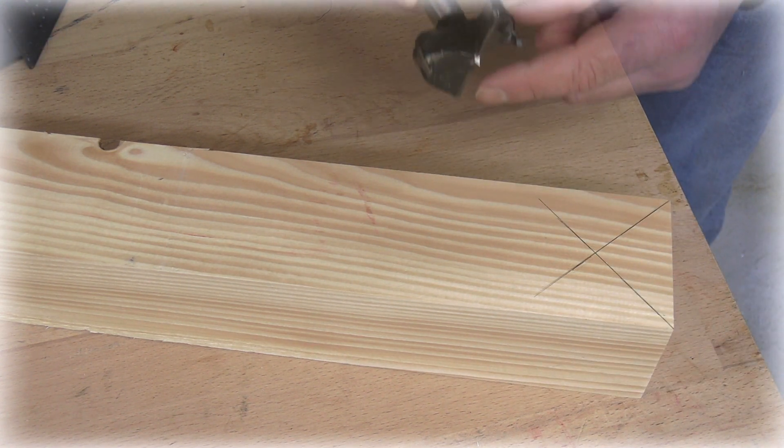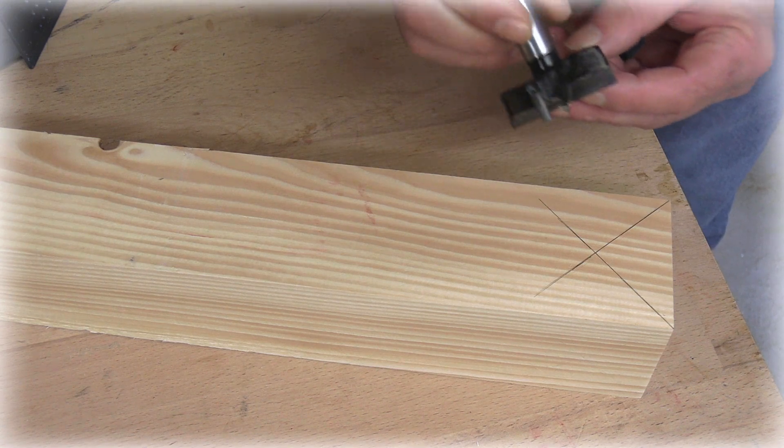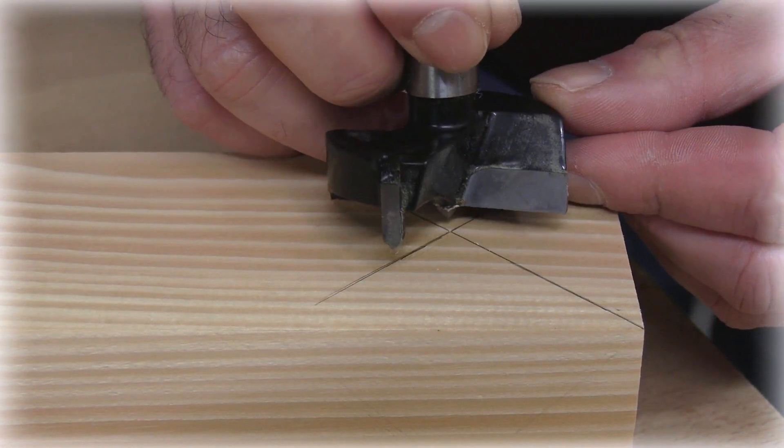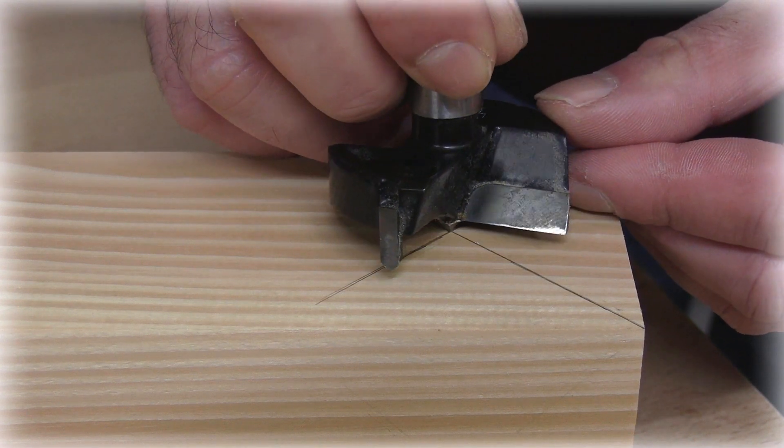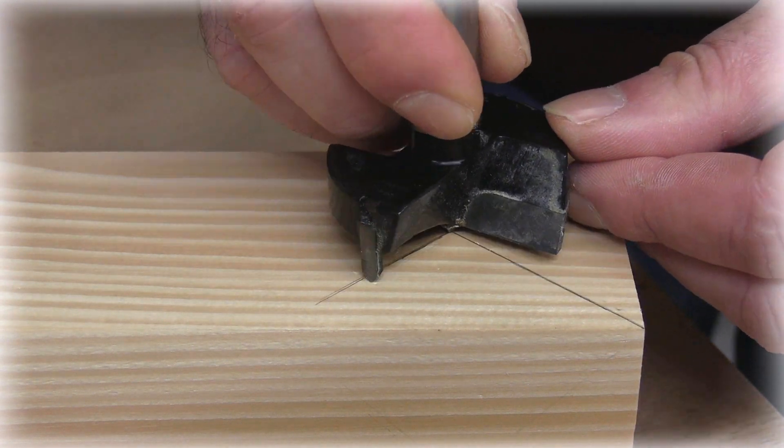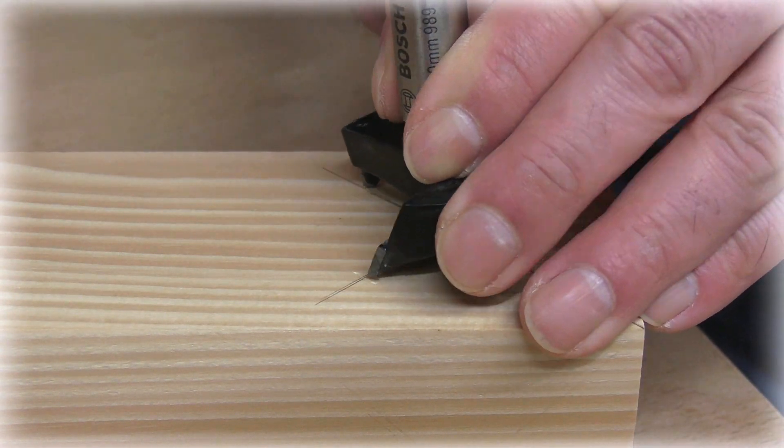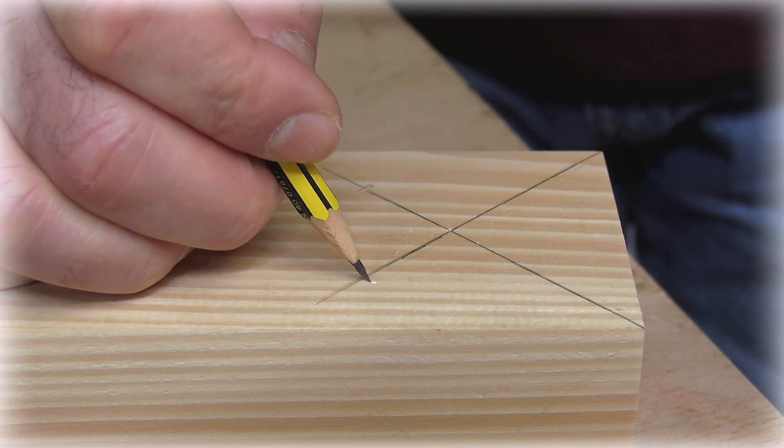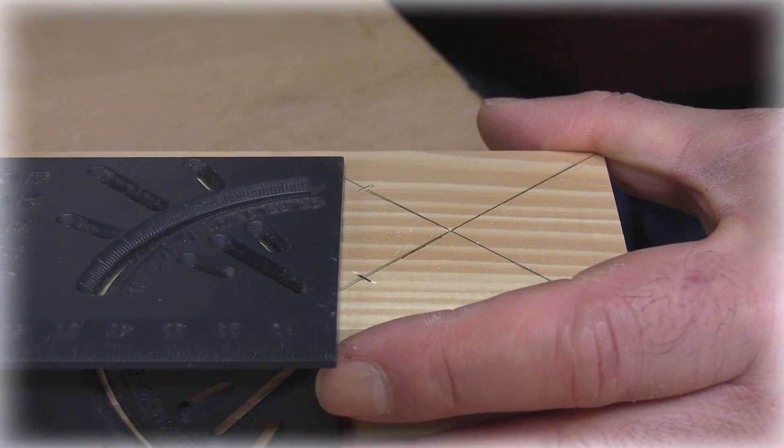Now with the 50 millimeter Forstner drill bit, I place it on that point. And with those kind of spurs that it has, I mark on the lines. And I join the points with a line.